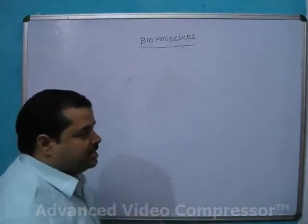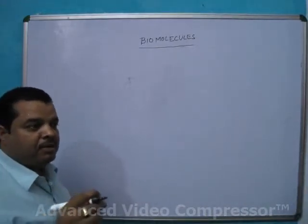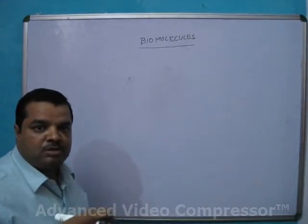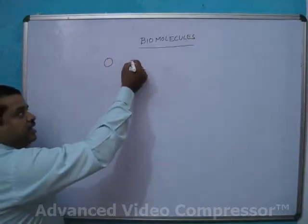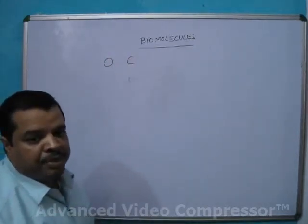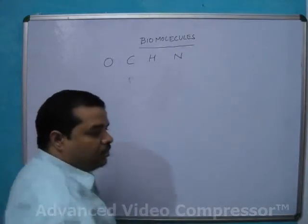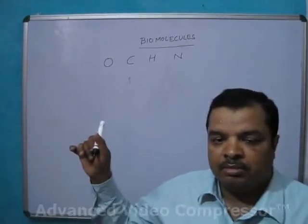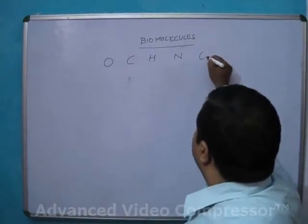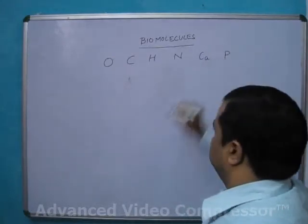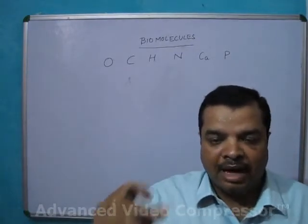Chiefly there are 6 elements that are a major part of Biomolecules: Oxygen, Carbon, Hydrogen, and Nitrogen — these 4 are having the highest percentage. And another 2 are Calcium and Phosphorus. In the living beings, these elements are present in the highest amount.